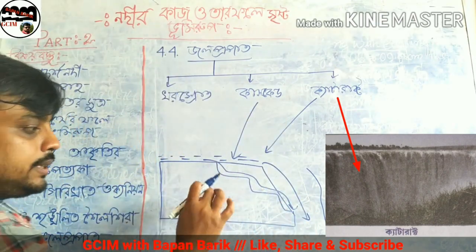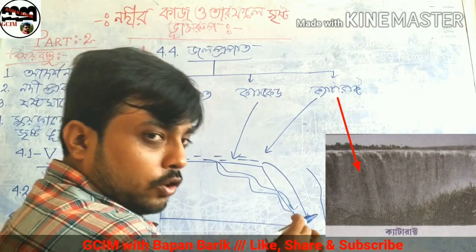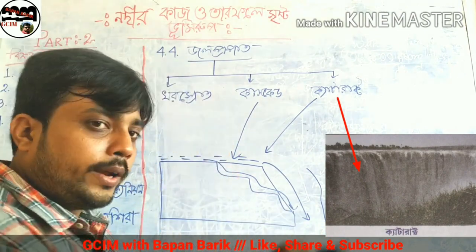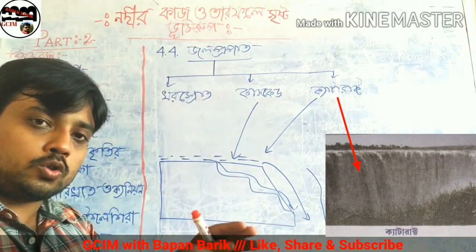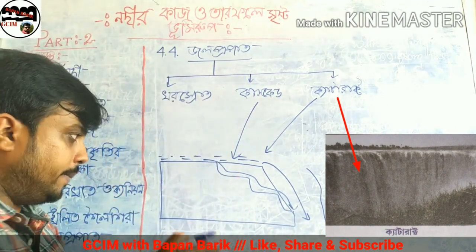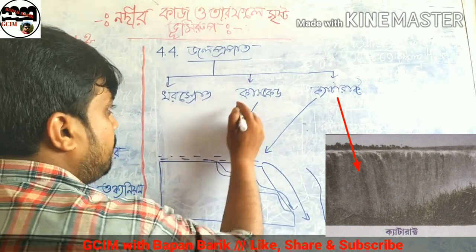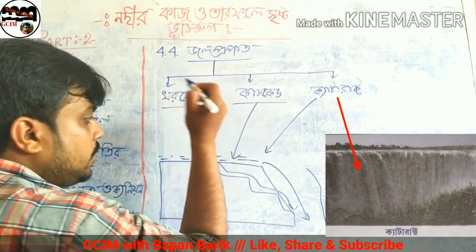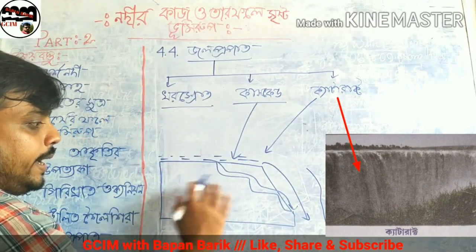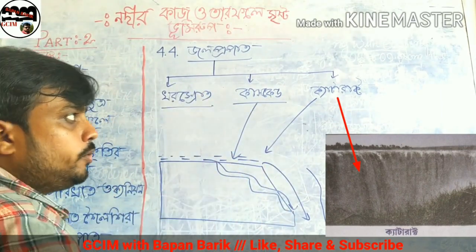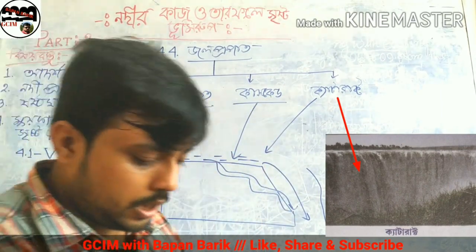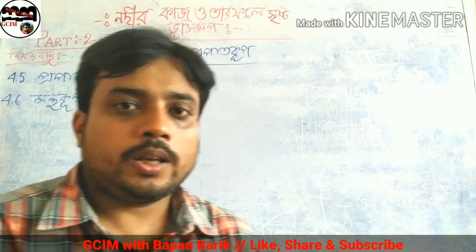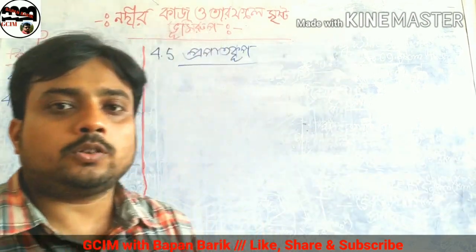Some groups have very small formations, and some groups have greater or larger formations. Each group has its own classification. In this context, we identify the feature called Prapath — the waterfall — and its different categories.